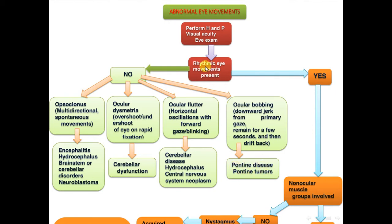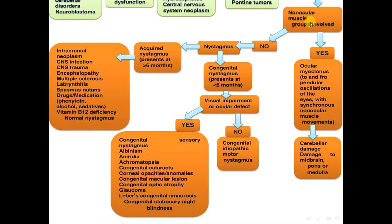If the eye movement is rhythmic, assess whether non-ocular muscle groups are involved. If non-ocular muscle groups are involved with rhythmic eye movement, this may be ocular myoclonus — to-and-fro pendular oscillation of the eyes with synchronous non-ocular muscle movement — due to cerebellar damage or damage to the midbrain, pons, or medulla. If non-ocular muscle groups are not involved, this is nystagmus — either acquired or congenital.